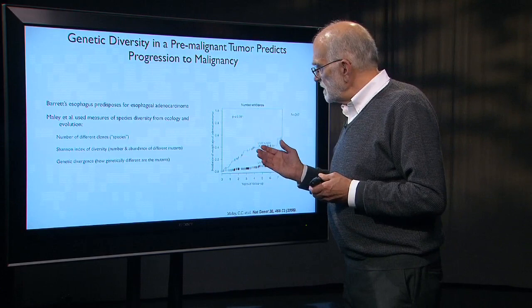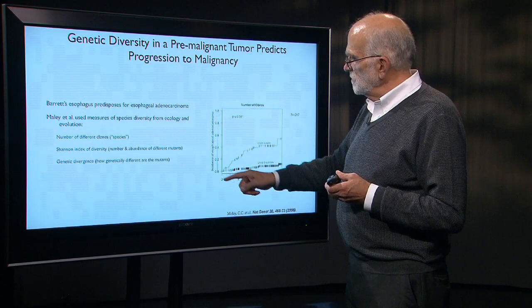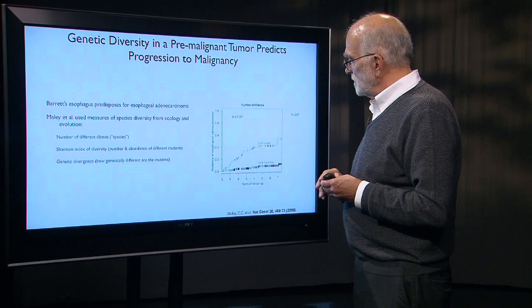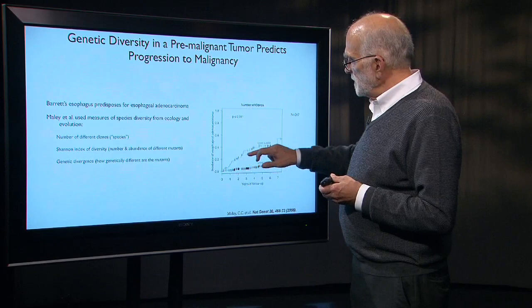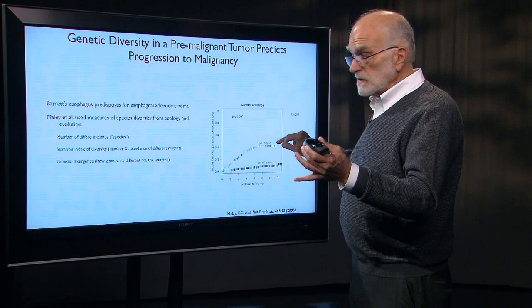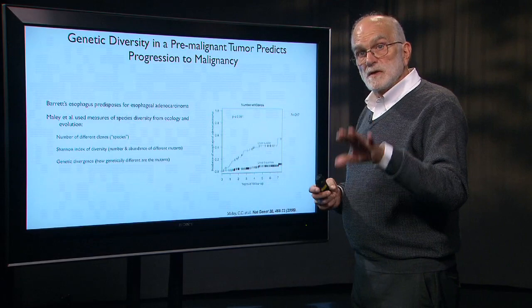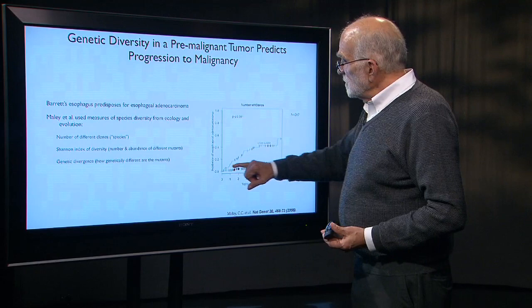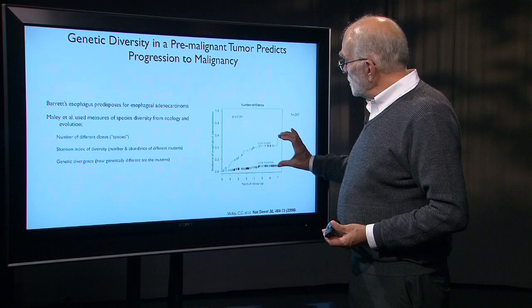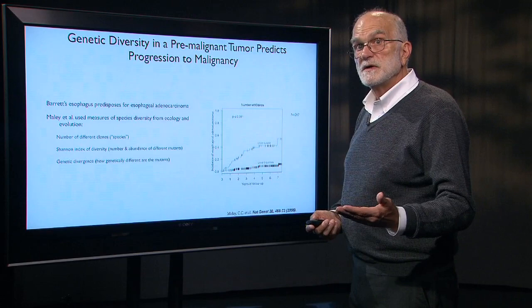Looking at the number of clones and the incidence of esophageal carcinoma from Barrett's esophagus: in the upper quartile — the top 25% of cases by number of clones — after seven years, nearly 60% had progressed to malignant cancer. In the lower 75%, where clones were less genetically variable, the maximum was about 15%. So the number of clones gives a pretty good prediction of the probability that the patient will get a lethal malignancy.